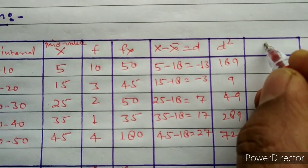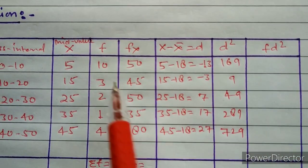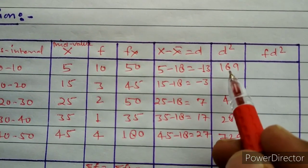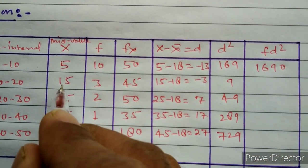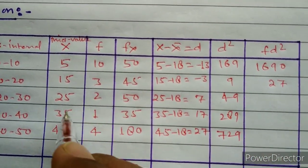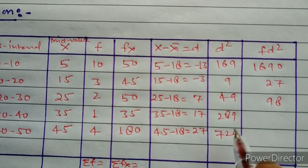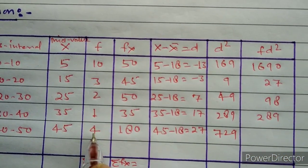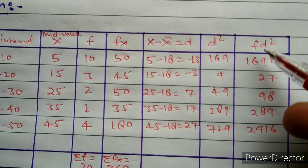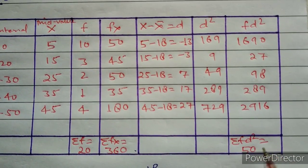At the last column we will calculate fD². To calculate fD², we multiply the frequency by D². Here the frequency is 10 and D² is 169, so 10 into 169 equals 1690. Next, 3 into 9 gives 27, 2 into 49 gives 98, 1 into 289 gives 289, and 4 into 729 gives 2916. We add all these values to get sigma fD², which equals 5020.